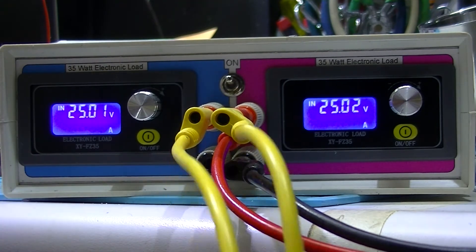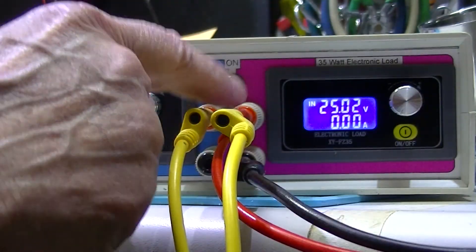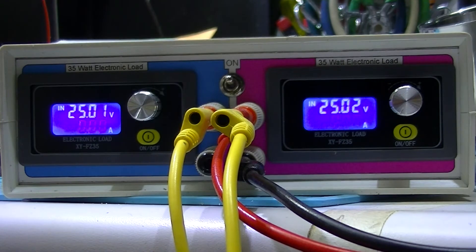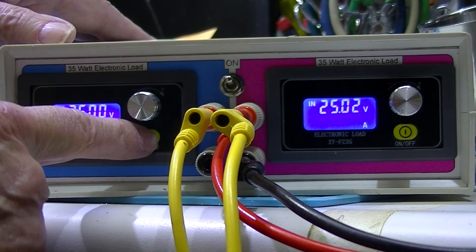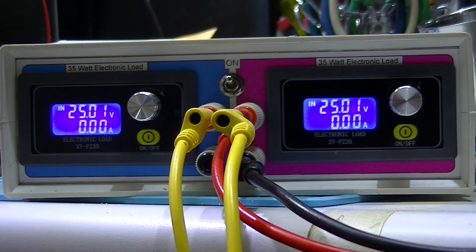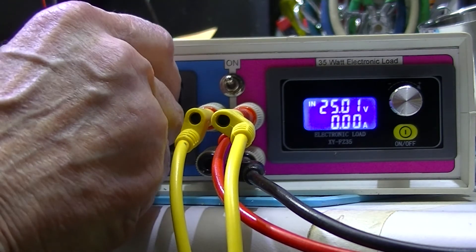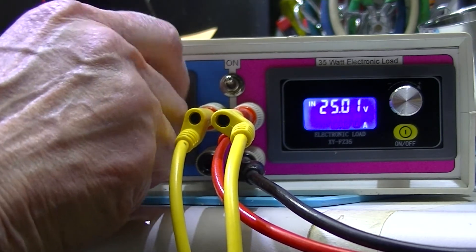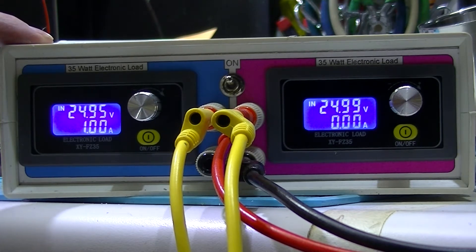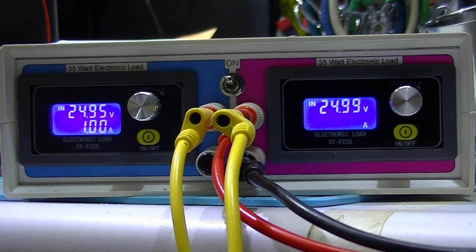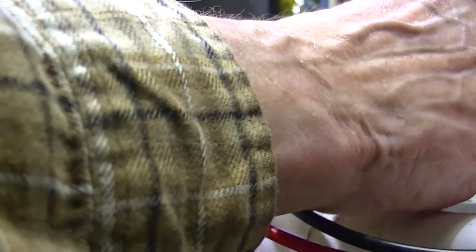This yellow banana parallels these two. Let's turn this load on. It's drawing zero. There's one amp. Now the voltage dropped down a little, probably because of lead loss. Certainly not taxing the power supply.